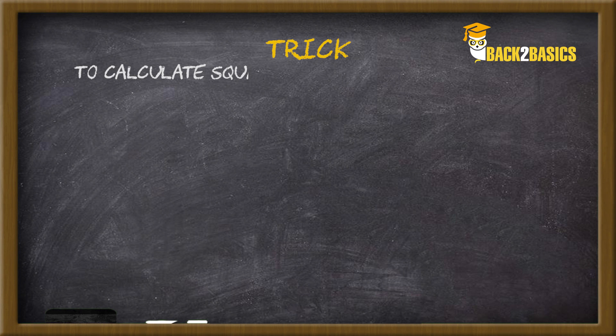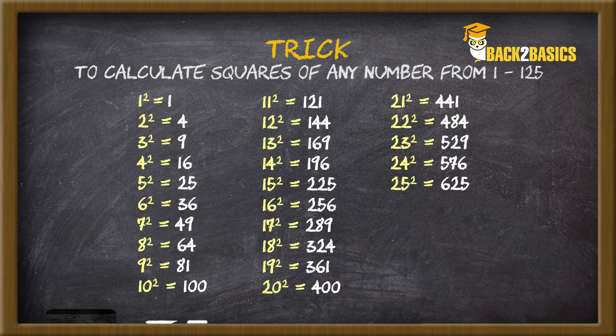To calculate squares of any number from 1 to 125, you'll first need to by heart thoroughly squares of 1 to 25. Now let's learn the trick part.